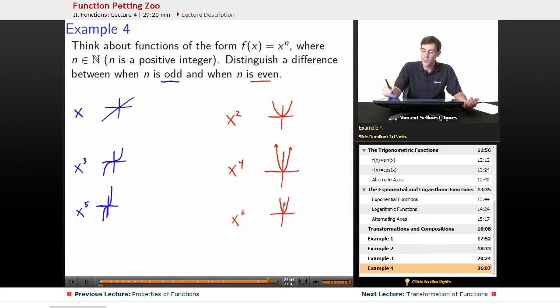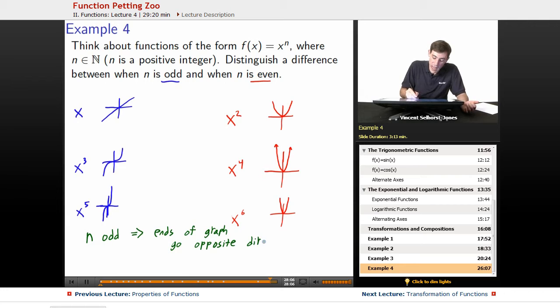So what we're seeing here is when n is odd, so n odd means that the ends of graph go in opposite directions. So the ends of the graph go opposite directions if n is odd. But if n is even, the ends go in same direction.